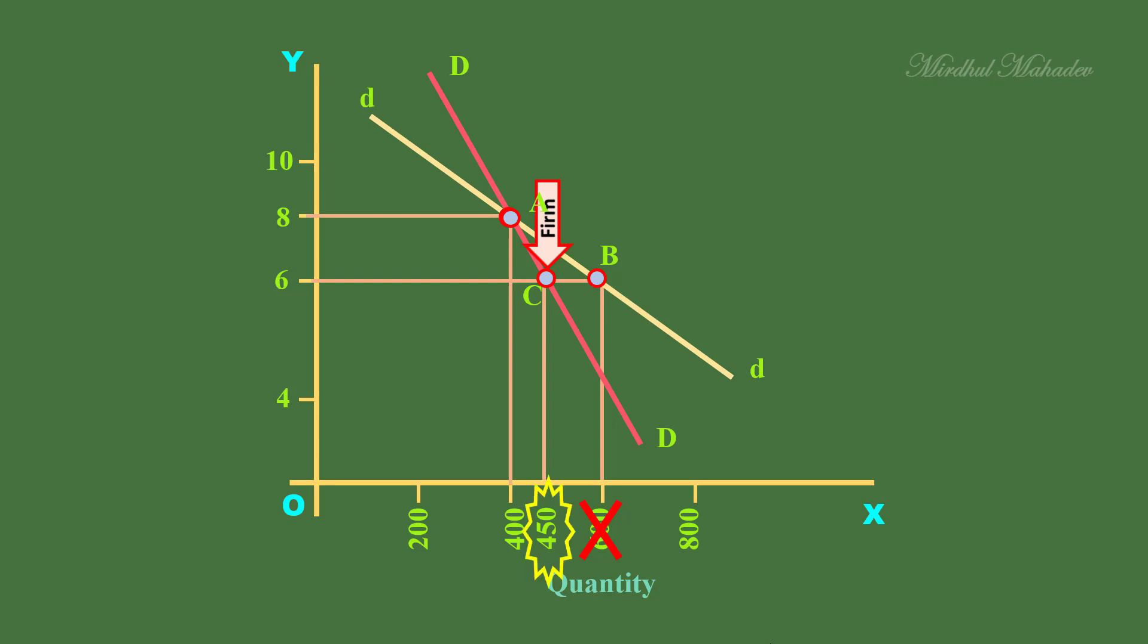The point to understand here is: One, each firm would like to expand its sales by sliding down along the perceived demand curve. But when all the firms do the same, their very action pushes them back to the proportional demand curve. Two, finally, they will be operating along the proportional demand curve. With this basic understanding, we shall proceed to discuss the short run equilibrium of a firm.